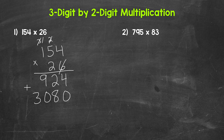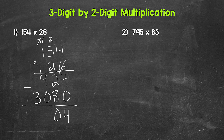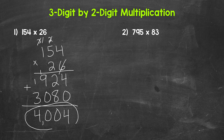And now we add 924 and 3,080. We'll start with four plus zero — that's four. Then we have two plus eight, that's 10, so write our zero and carry the one. Then we have one plus nine is 10, plus zero is 10, so a zero, carry the one. And then we have one plus three, which is four. So we end up with 4,004 — and that's our final answer.